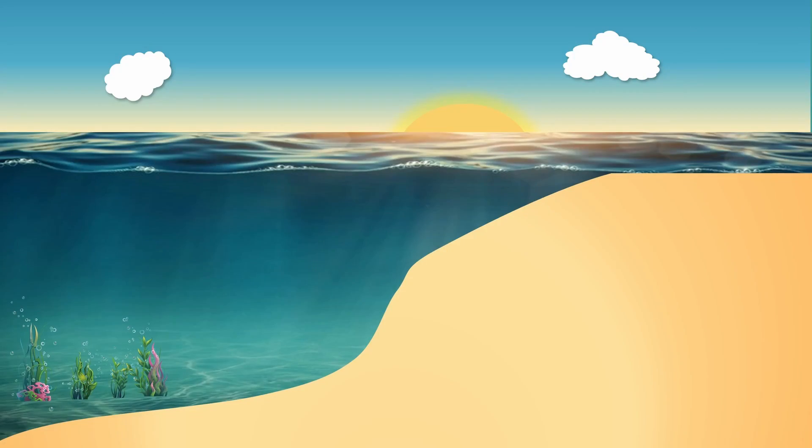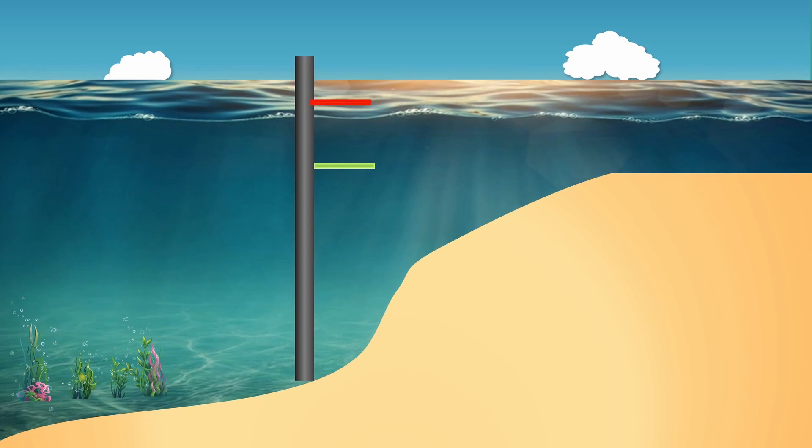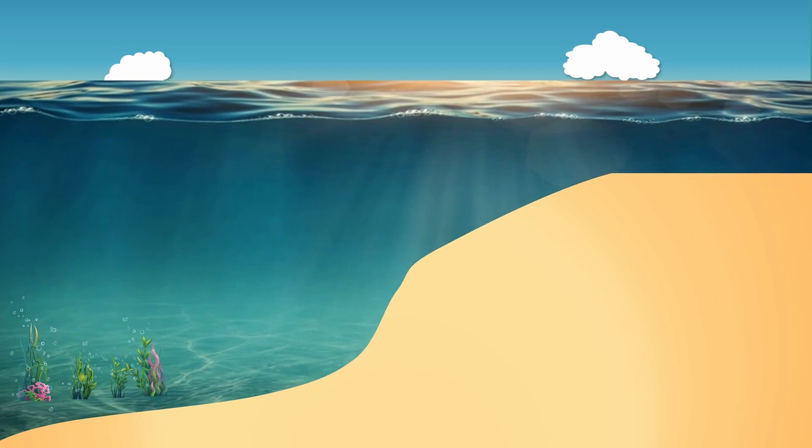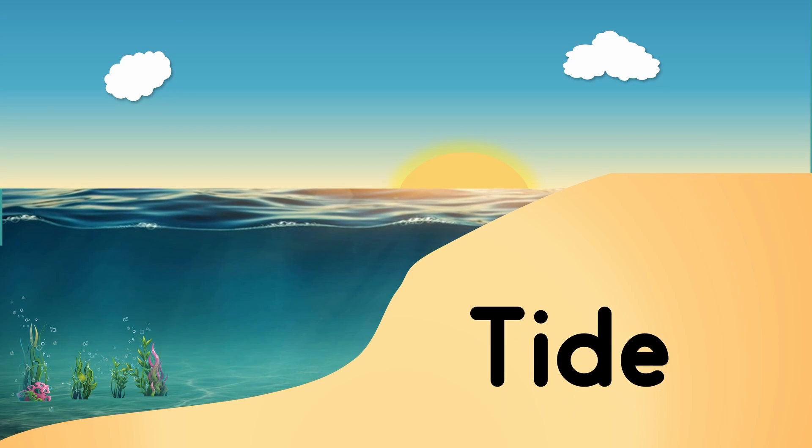Let me give a simple explanation. Just consider this level to be the sea level. But the sea level is not constant. Sometimes it rises and sometimes it falls. This phenomenon that makes the water either go up or down is known as the tide.